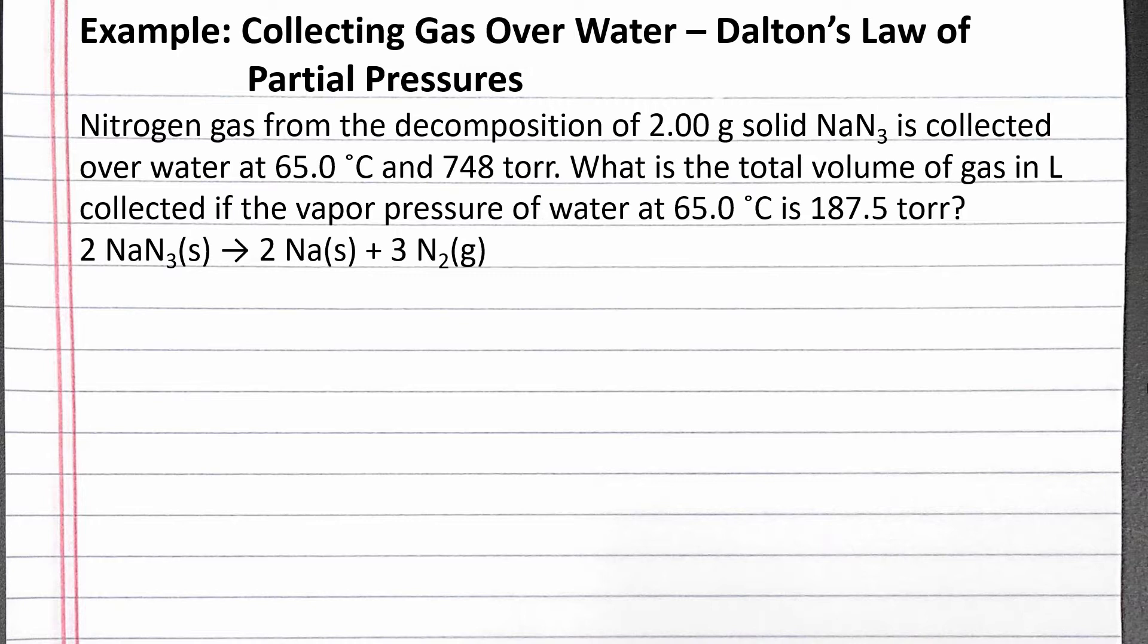Our problem reads: nitrogen gas from the decomposition of 2.00 grams solid NaN₃ is collected over water at 65.0 degrees Celsius and 748 torr. What is the total volume of gas in liters collected if the vapor pressure of water at 65.0 degrees Celsius is 187.5 torr?